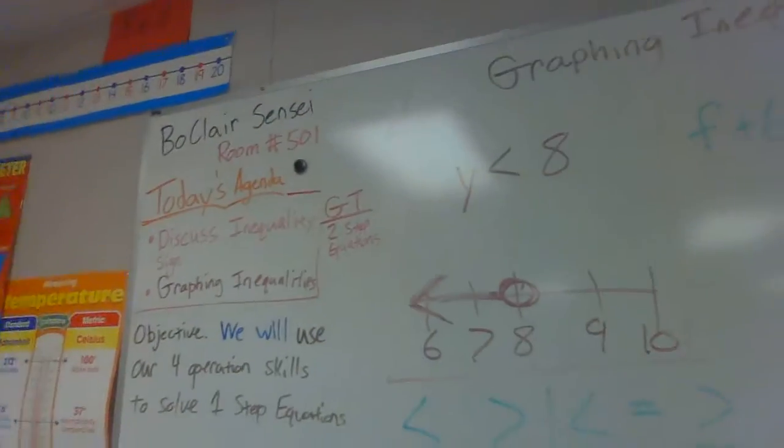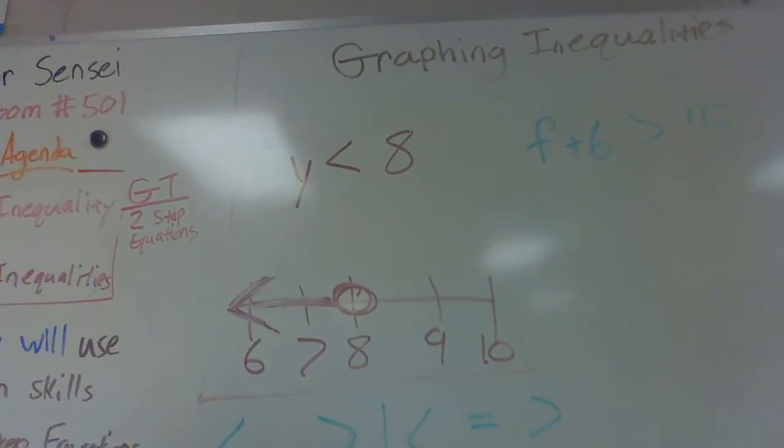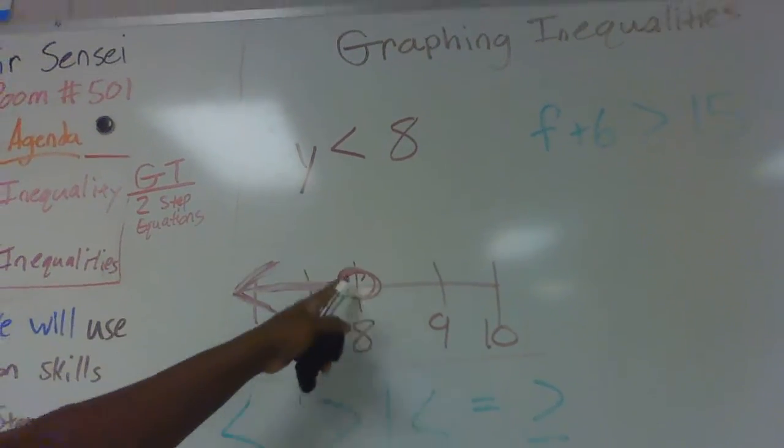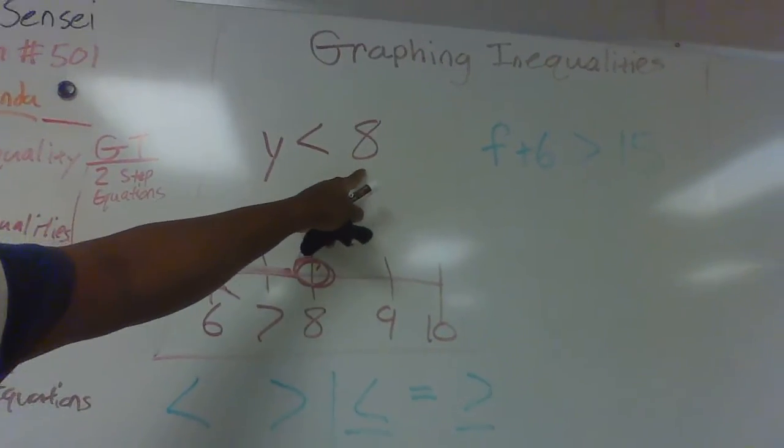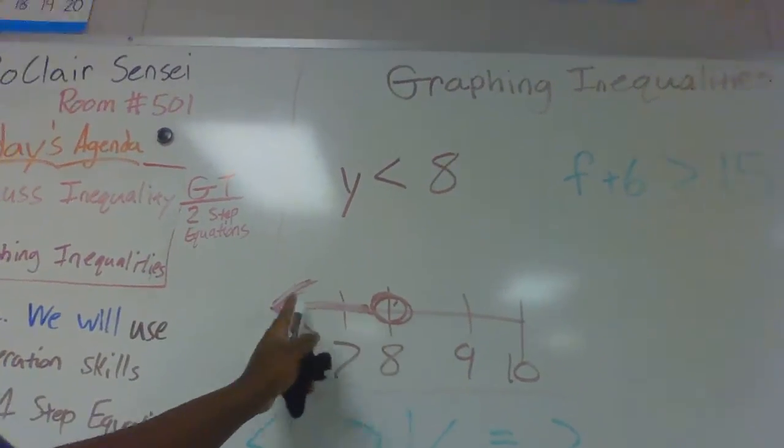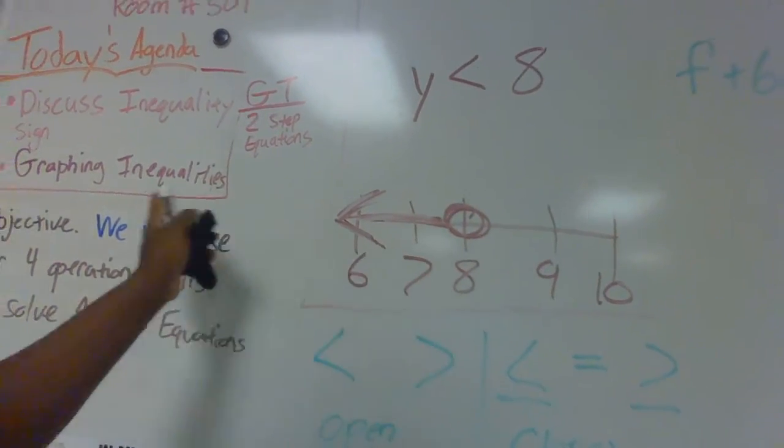All right, so an example from the other day: we had y is less than 8, so since it was less than we had an open circle. And since my answer is less than 8, my arrow points at everything that could be a possible answer, so my arrow is pointing at all the numbers that are less than 8, which would continue in that direction.